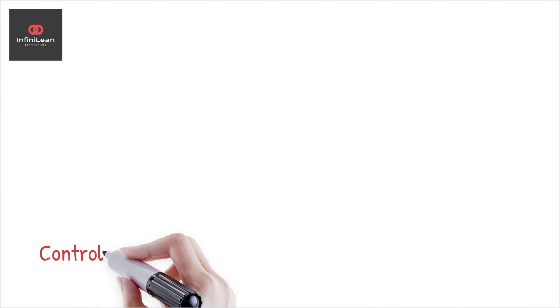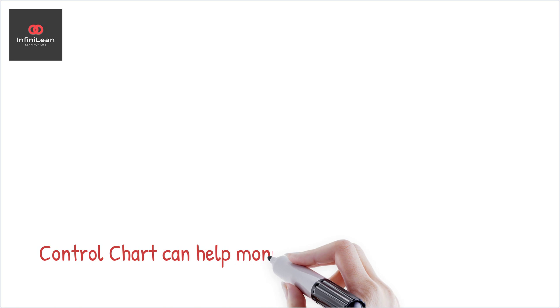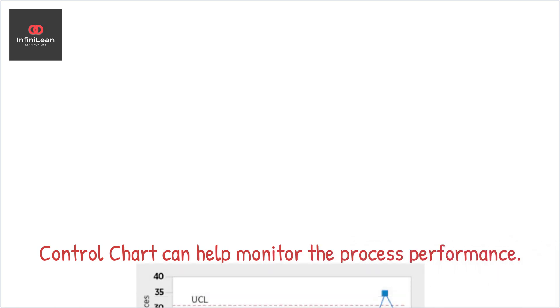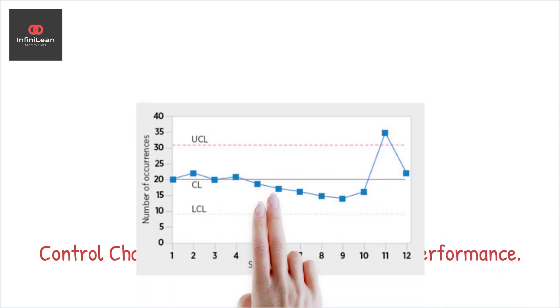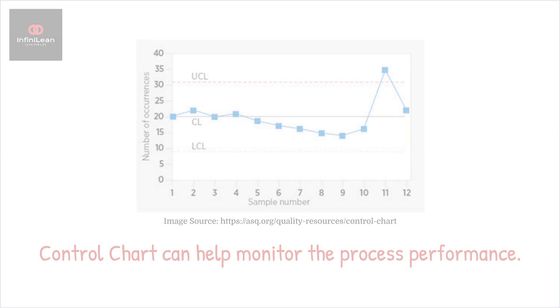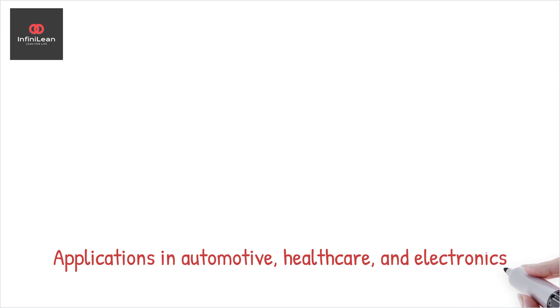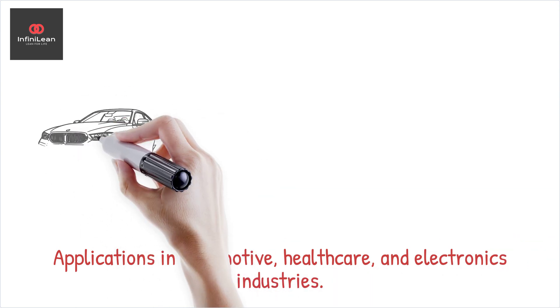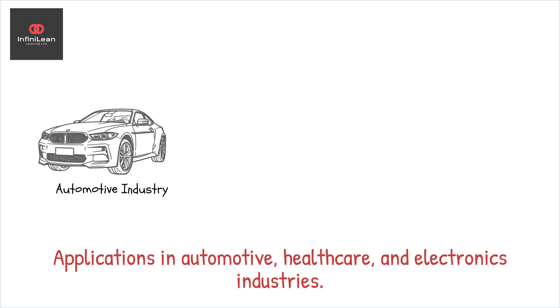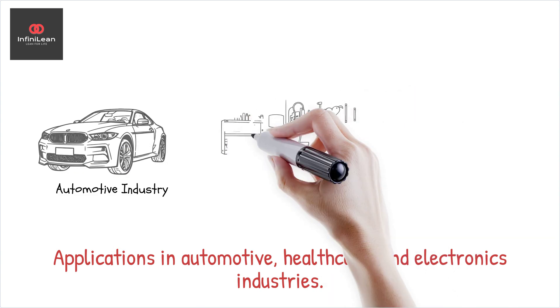Using tools like control charts, you can continuously monitor process performance and make data-driven decisions to improve. Real-world applications of process capability analysis can be seen in industries like automotive, healthcare, and electronics, where precision and consistency are non-negotiable.